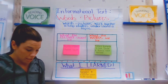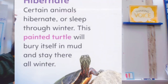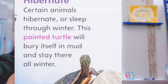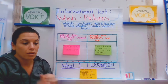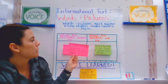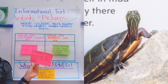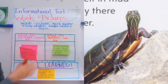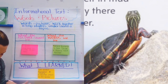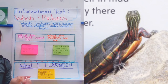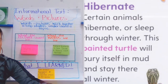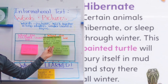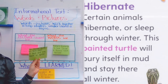Let's go to the next section on the launch page. This one's called hibernate. It says: certain animals hibernate or sleep through winter. This painted turtle will bury itself in mud and stay there all winter. The picture is of a turtle standing on a rock — it looked like it was searching for a place to bury itself, because its neck is out and it's looking around, searching for a place to bury itself for the winter.